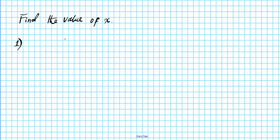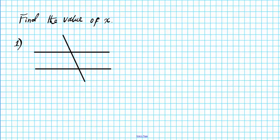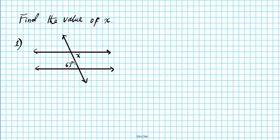Let's say we have a transversal and two parallel lines. So let's say this is x right here, and this is 63 degrees, and we are to find x. What is the measure of angle x here? In order to answer it, let's see if we can identify the relationship between this pair of angles. This pair of angles are alternate interior angles.